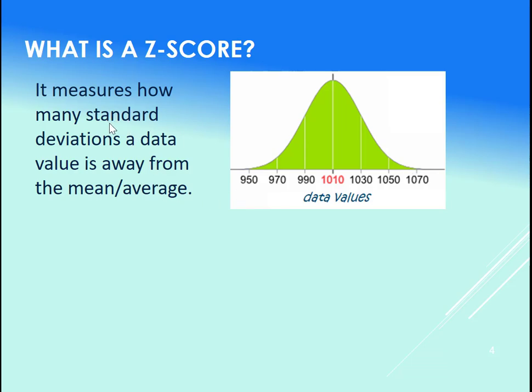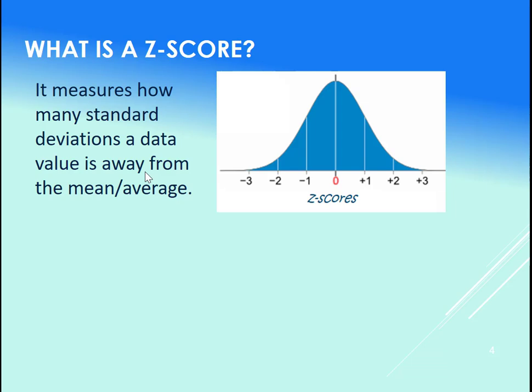And the standard deviation, if it's at 20 for example, that means that on average, a data value—any x value—is an average distance of 20 away from the mean, in this case at 1010. Of course, data can be further away than that, but the average distance that a data point is away from the mean is 20.